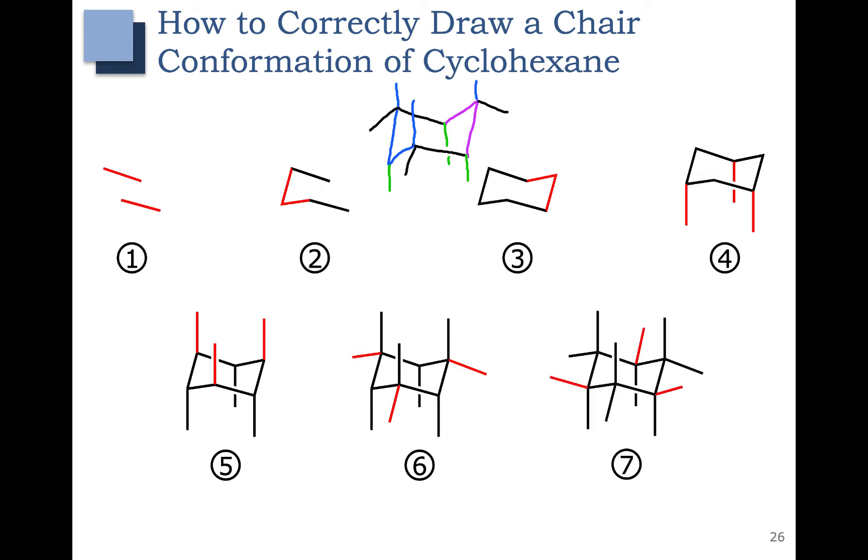Lastly, for each carbon where we have a bond pointed down in green, we need a bond pointed up. I'll draw those in red: one, two, three. So this is what a chair conformation of cyclohexane looks like.